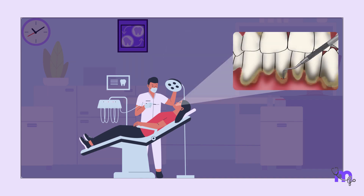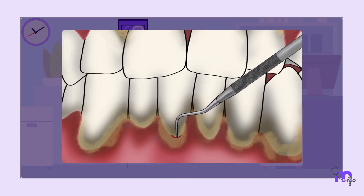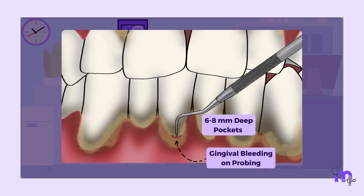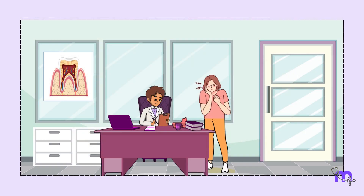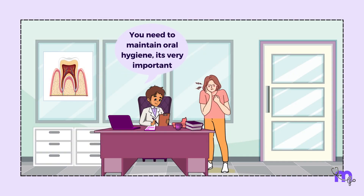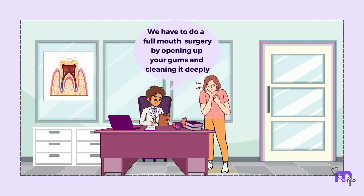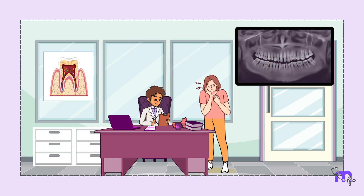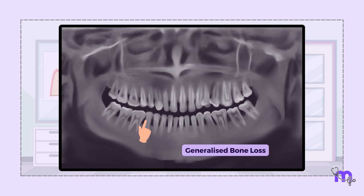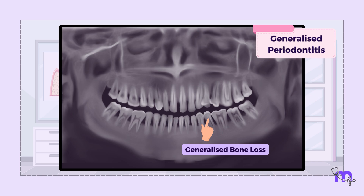I started probing on all the teeth and noted there were generalized teeth pockets with depths ranging from 6 to 8 mm. The gingiva was bleeding on probing. I explained to her about the importance of oral hygiene and advised her to have a full mouth flap surgery. After analyzing the patient's radiograph, which depicted generalized bone loss, I classified the case as generalized periodontitis.